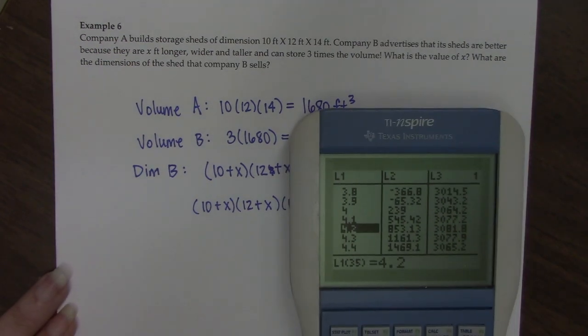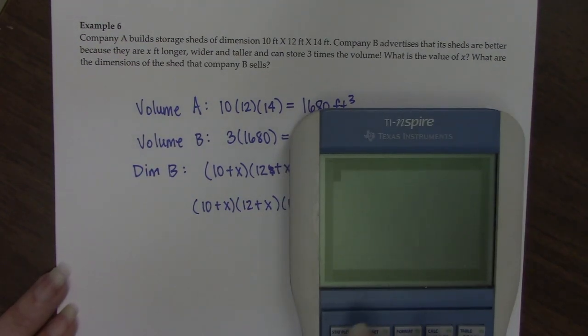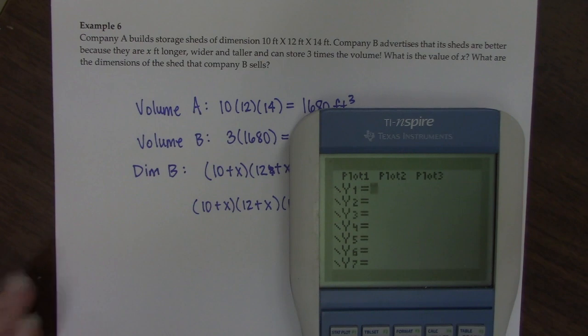If we go back to the calculator and we go to Y1, I'm going to enter this function in. So 10 plus X times 12 plus X times 14 plus X, and then I'm going to do a second function that's 5040.